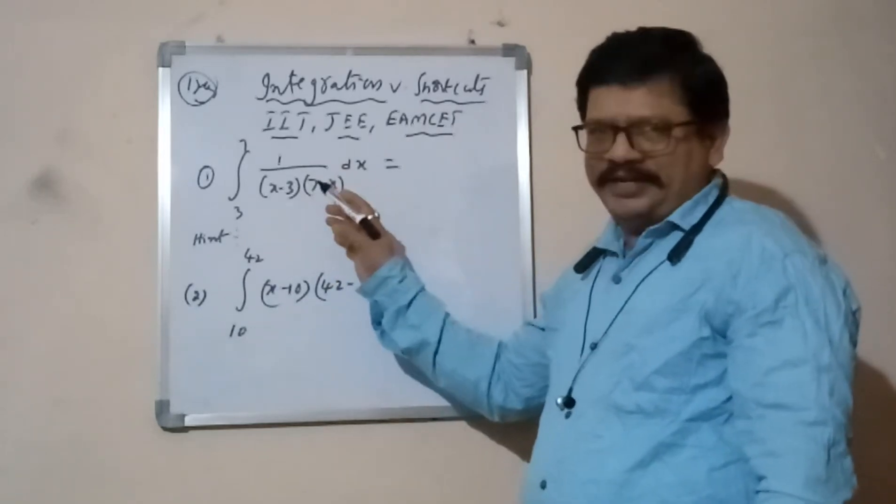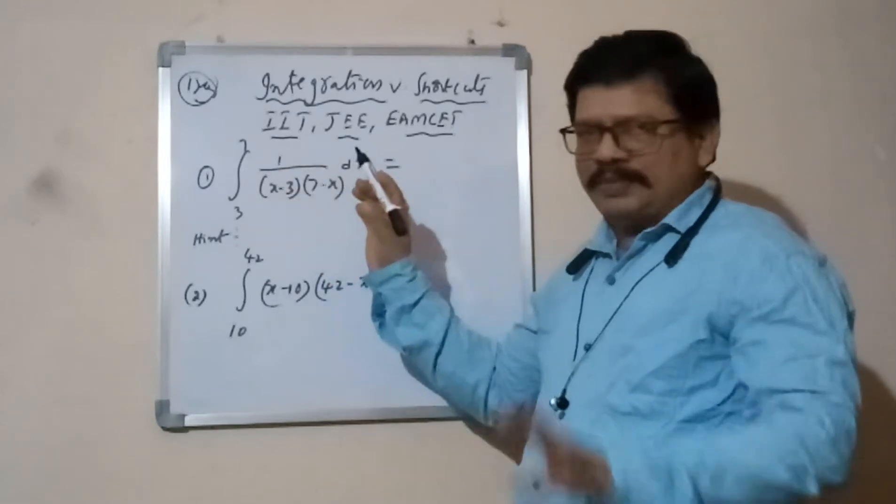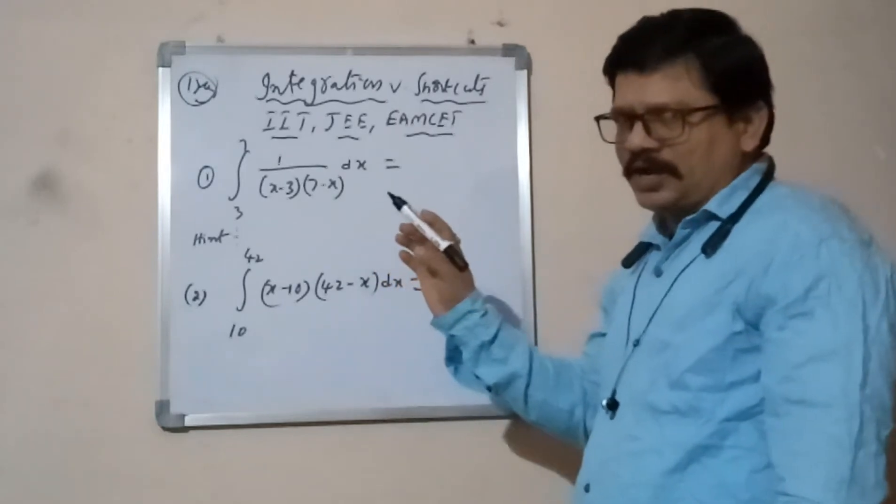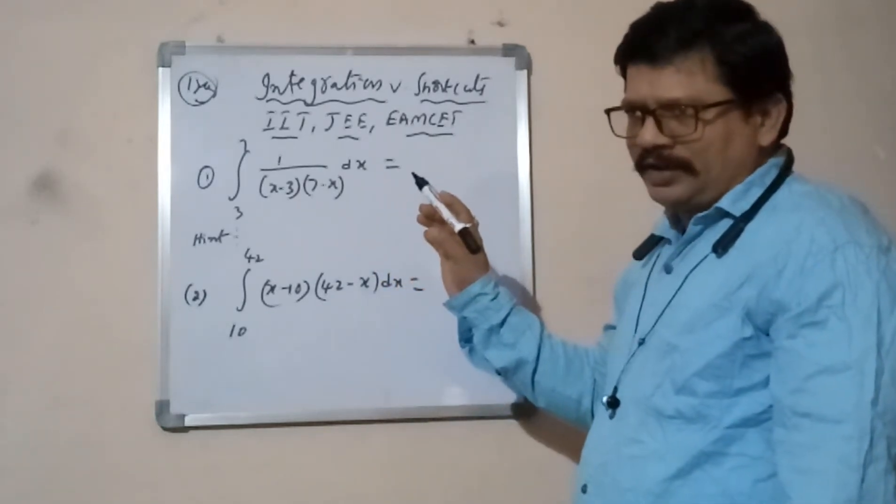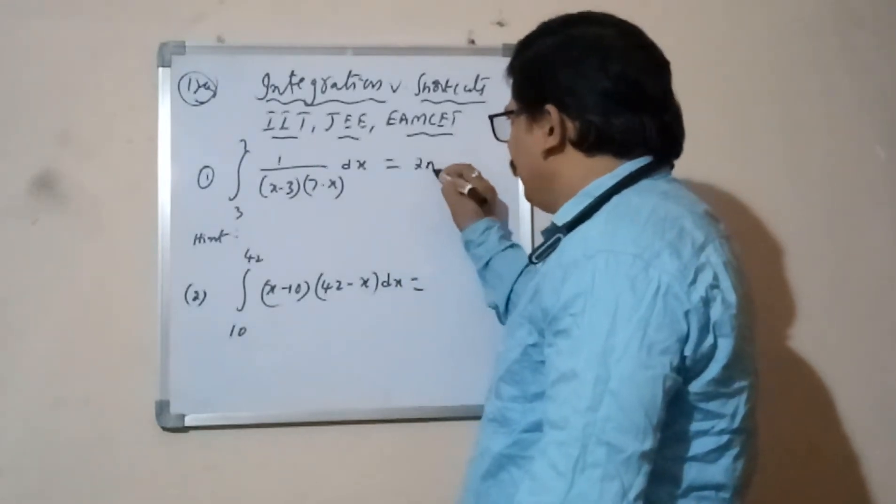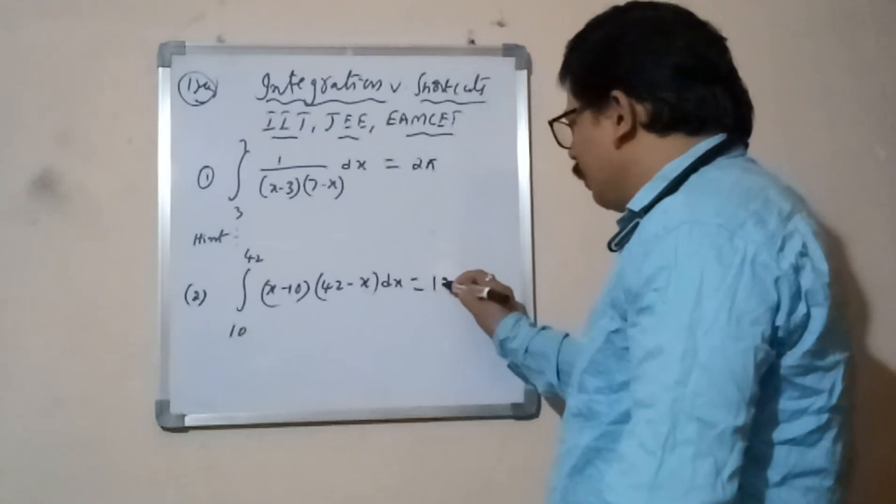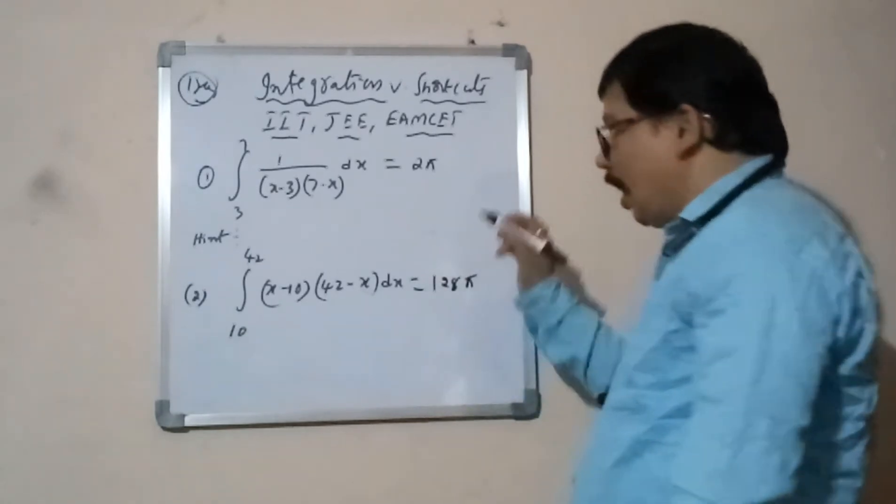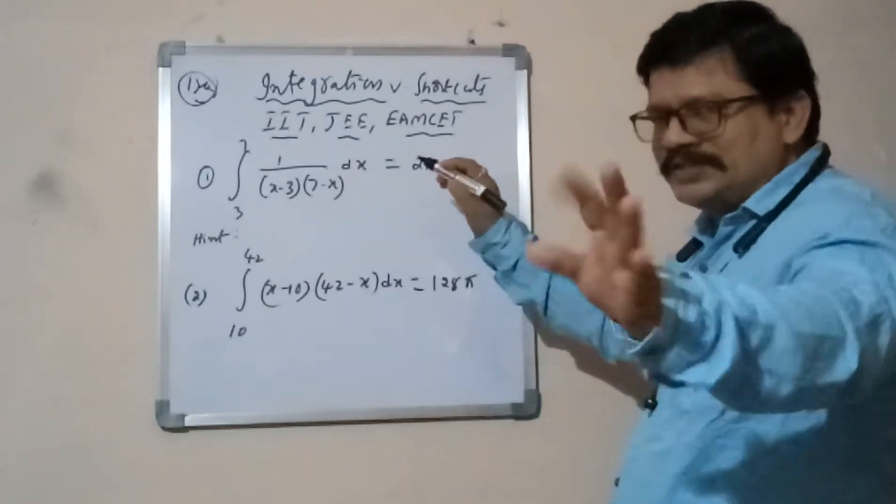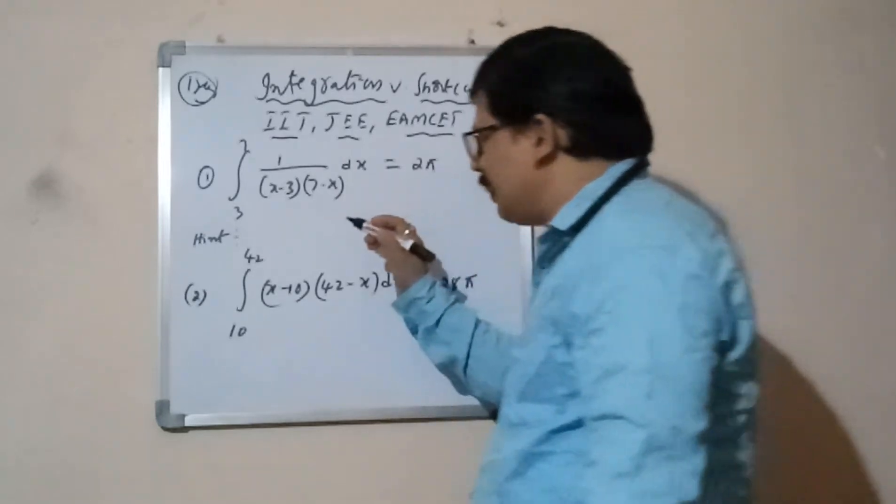This actual IIT advanced question. This normal way minimum 3 to 5 minutes time taking. I will tell just only one second. Listen carefully, this answer 2π over, now this answer 128π. How? I will tell this. I think only 2π, 1 second enough time.